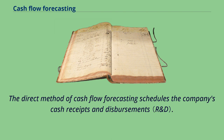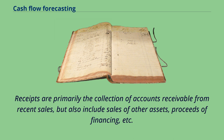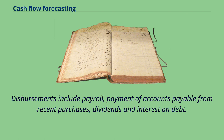The direct method of cash flow forecasting schedules the company's cash receipts and disbursements. Receipts are primarily the collection of accounts receivable from recent sales, but also include sales of other assets, proceeds of financing, etc. Disbursements include payroll, payment of accounts payable from recent purchases, dividends, and interest on debt.